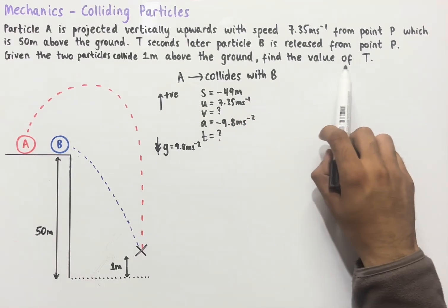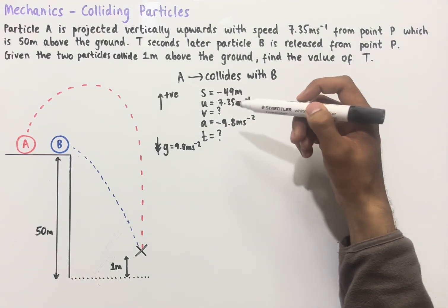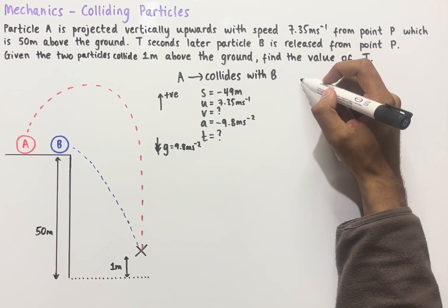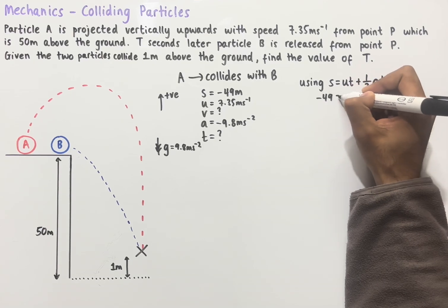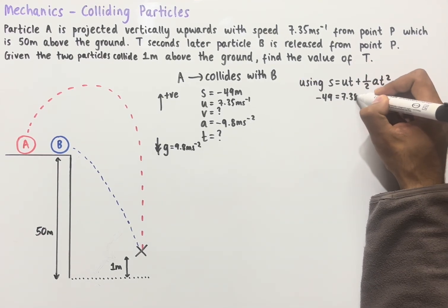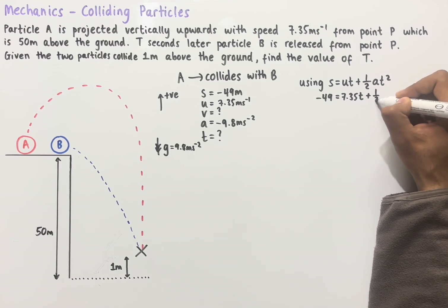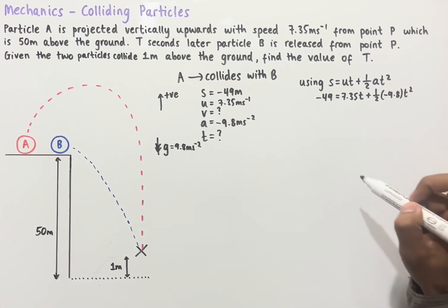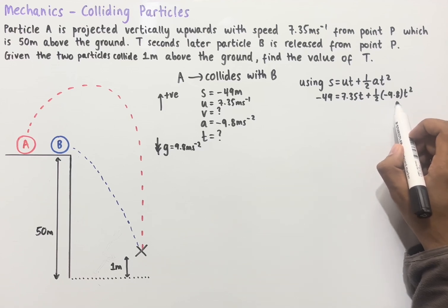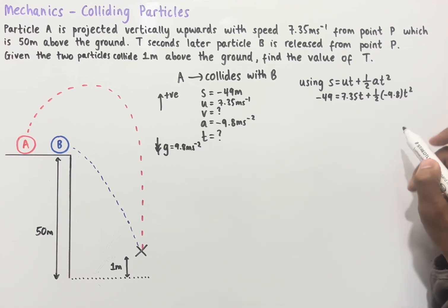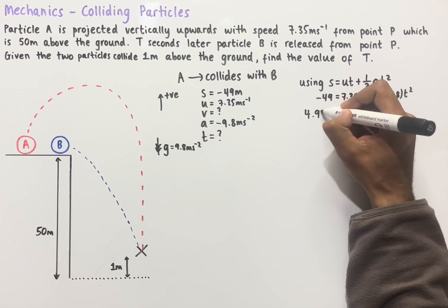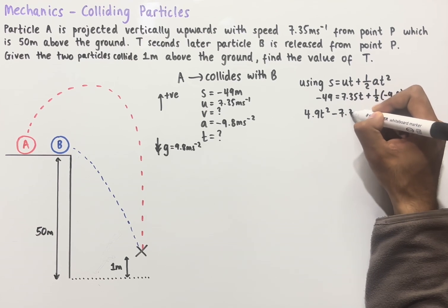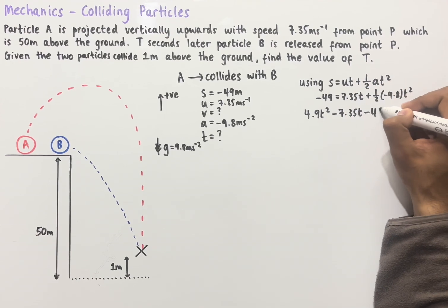Since we want to work out a time T, let's find the time for this journey. We have S, U, and A known, so we use S equals UT plus one-half AT squared. Substituting: S equals minus 49, initial velocity is 7.35, and we have plus one-half times minus 9.8 times T squared. Simplifying, one-half times minus 9.8 gives minus 4.9 T squared. Rearranging gives 4.9T squared minus 7.35T minus 49 equals zero.